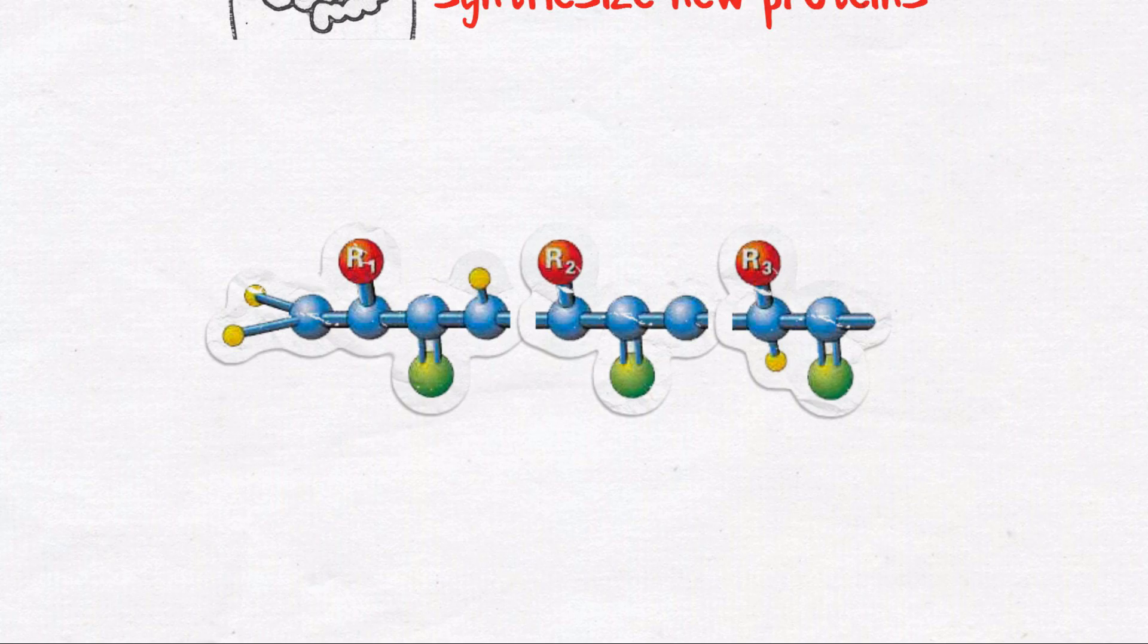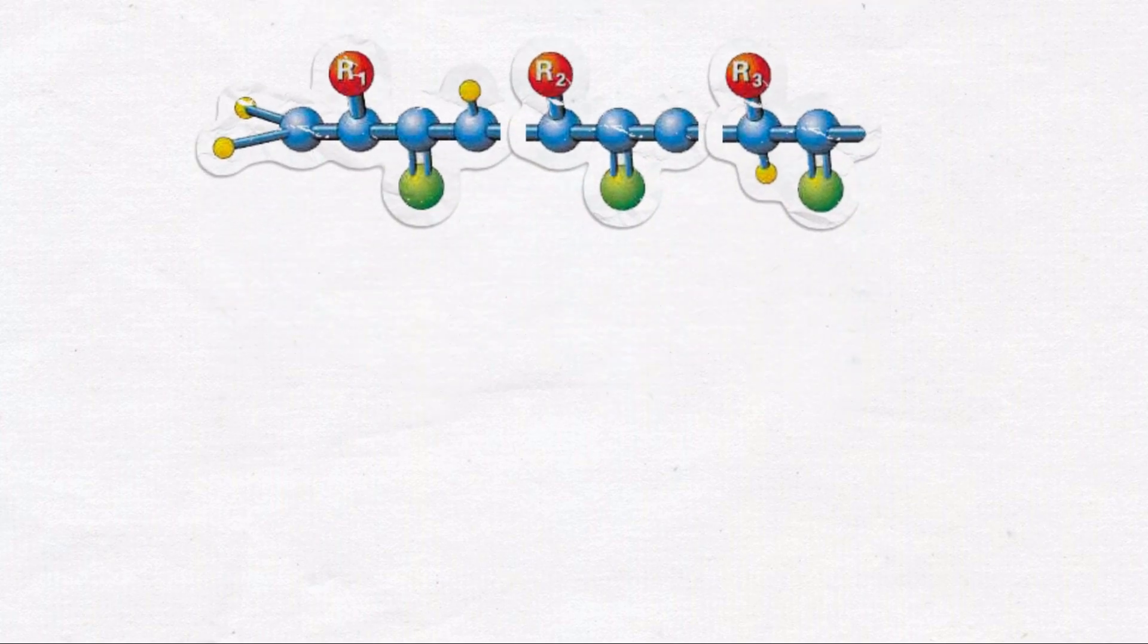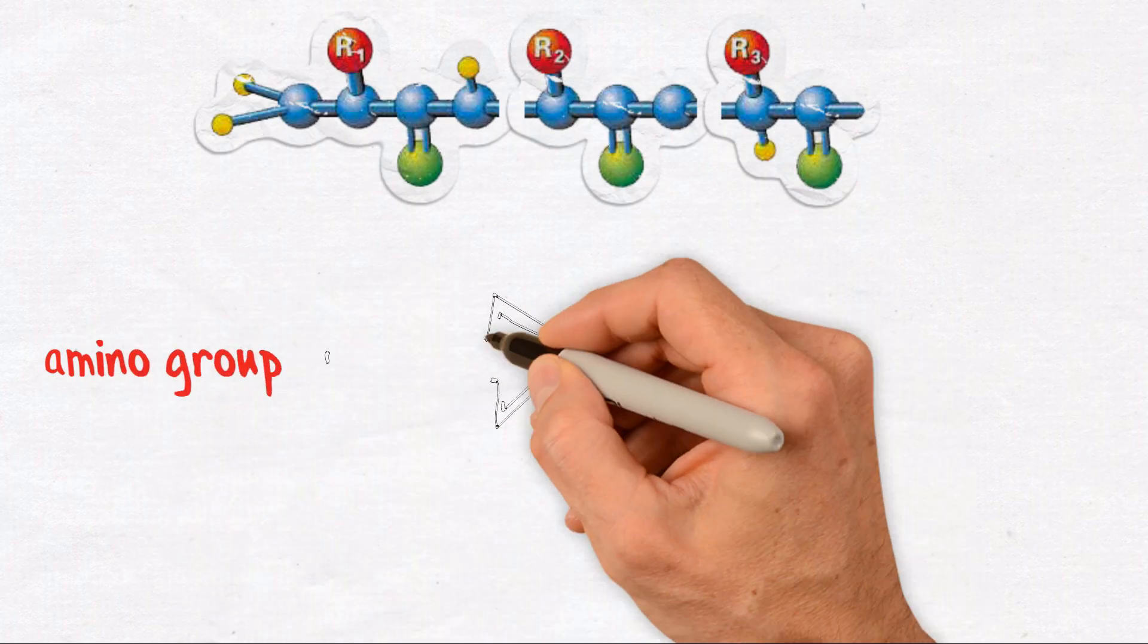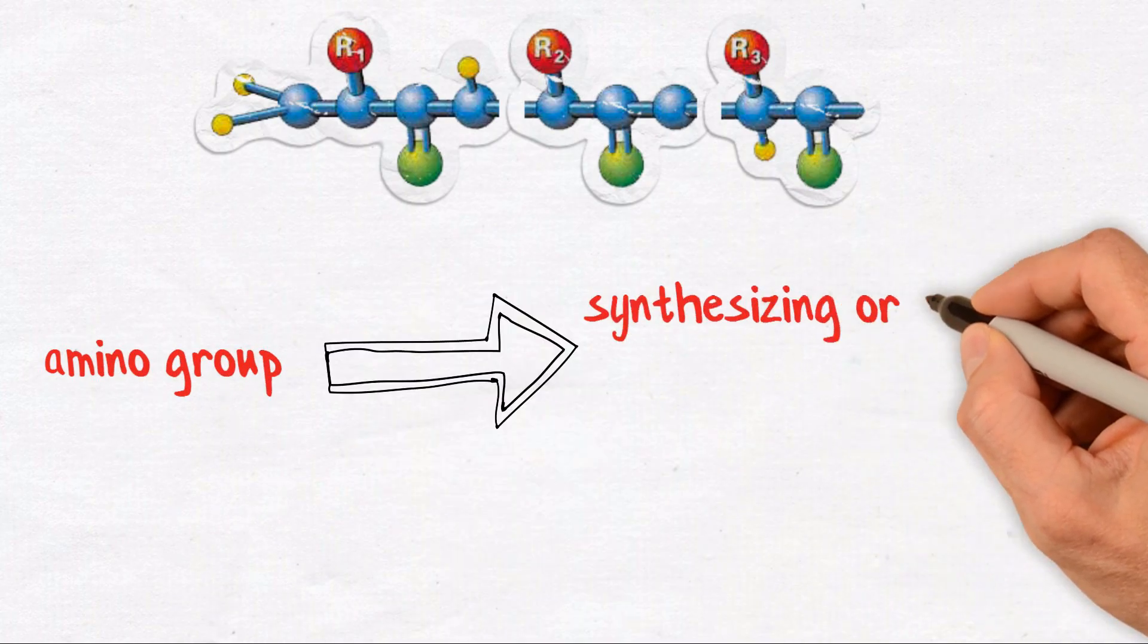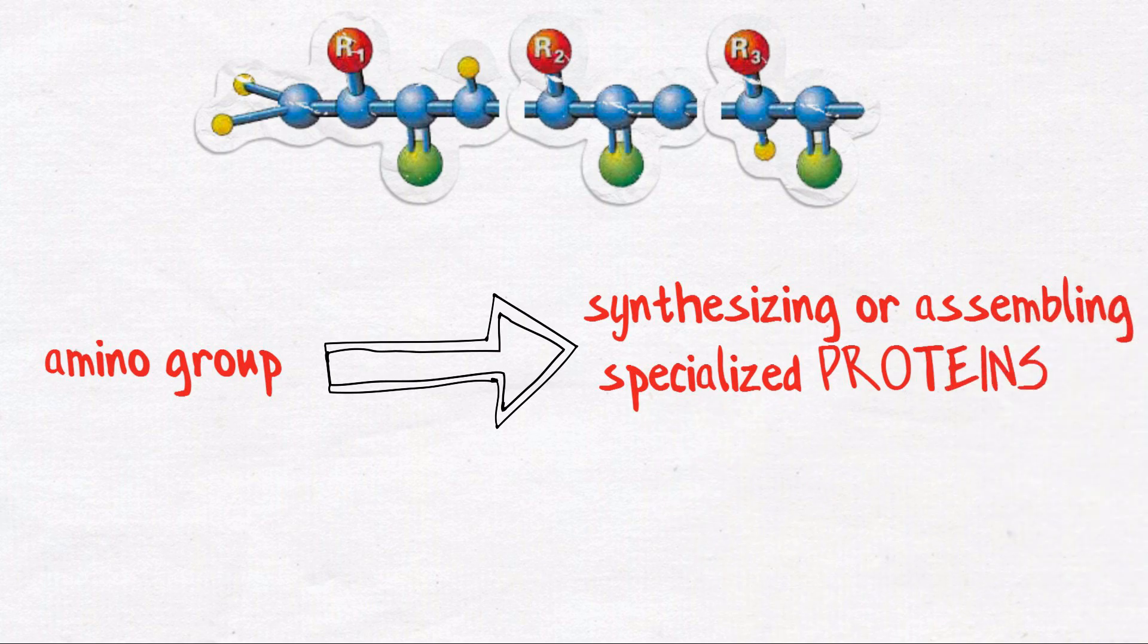In addition to carbon, hydrogen, and oxygen atoms, amino acids contain a nitrogen amino group. The amino group is essential for synthesizing or assembling specialized proteins in your body.